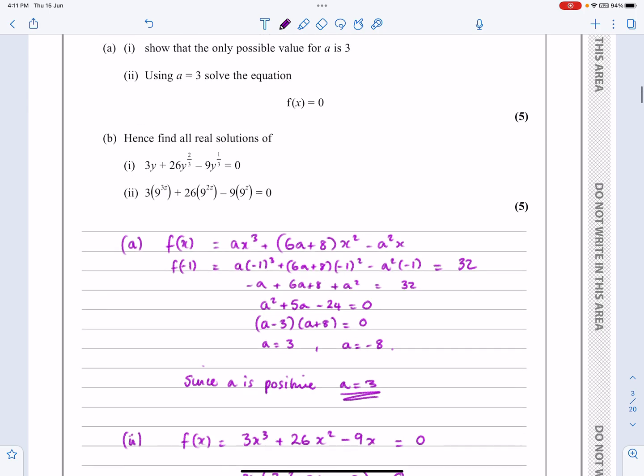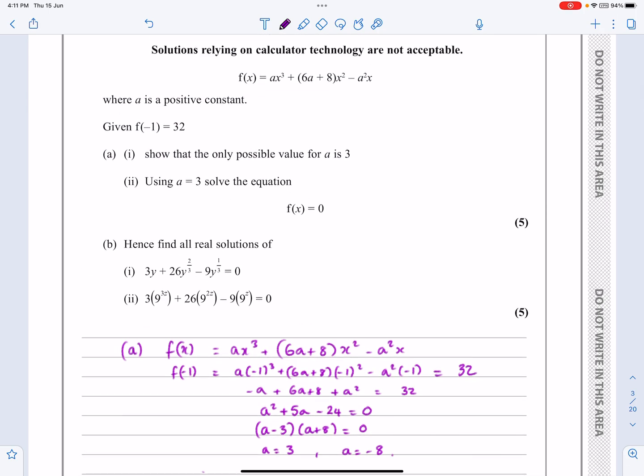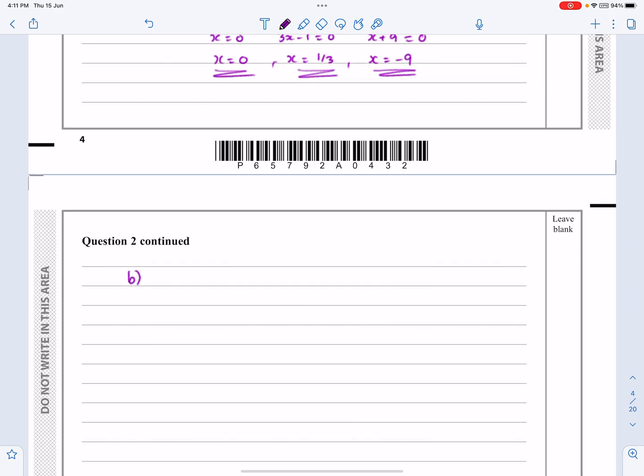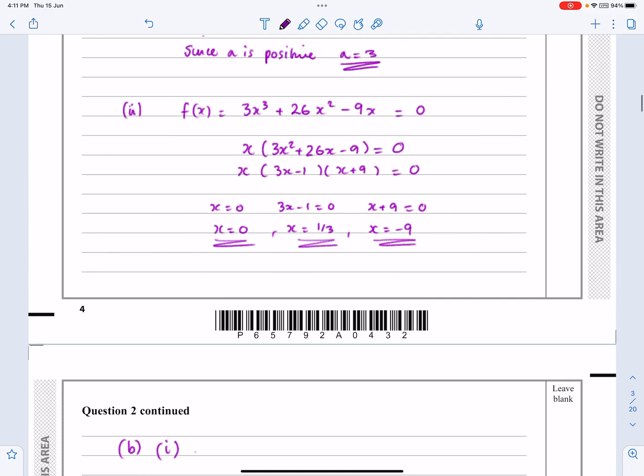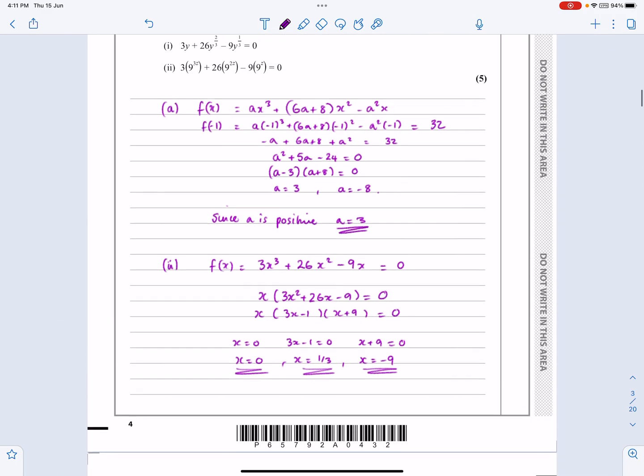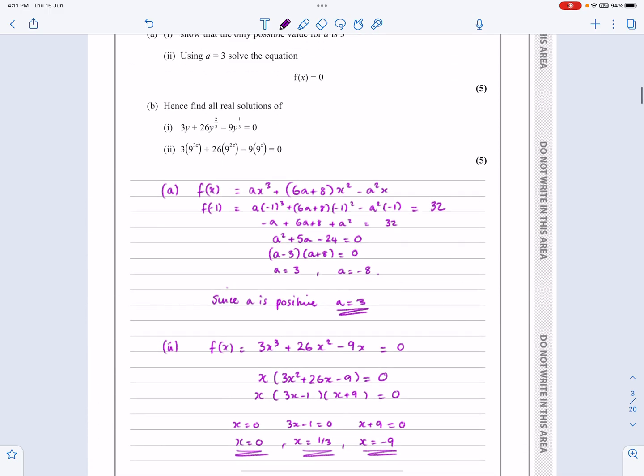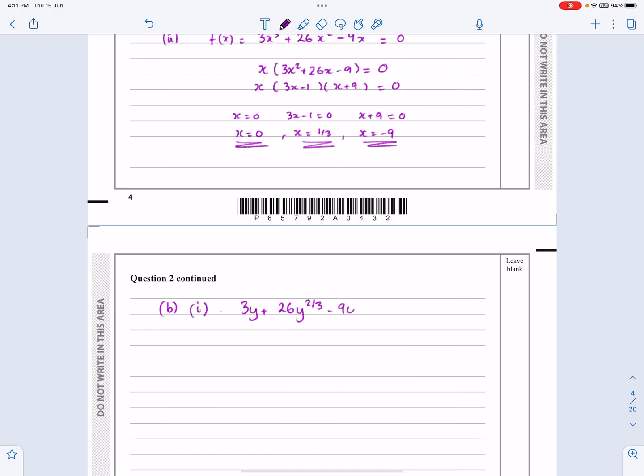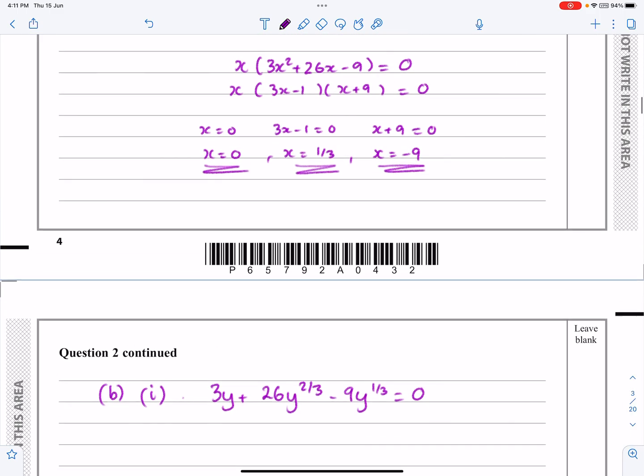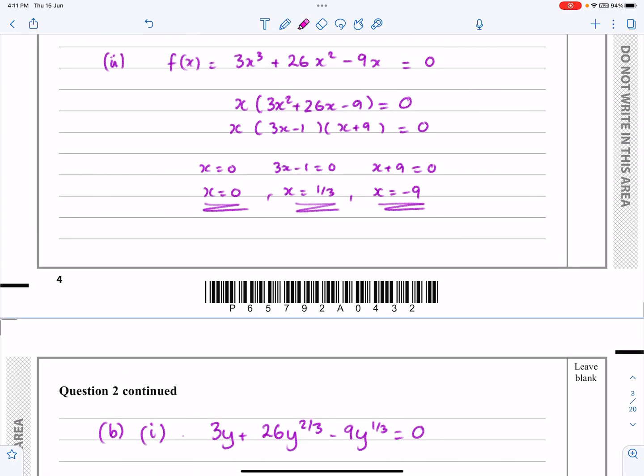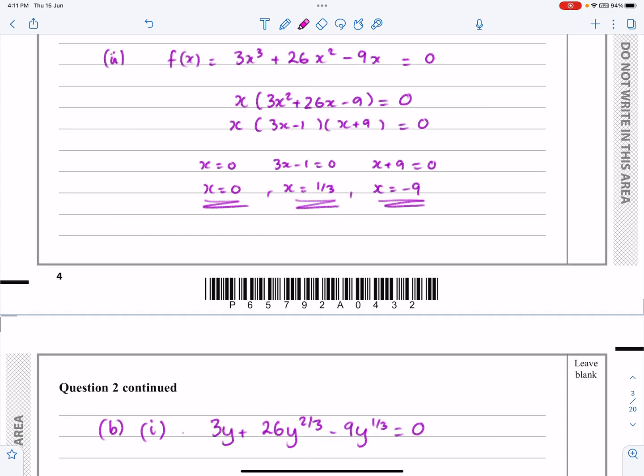Okay, now on to part B. Part B says, hence find the real solutions of this thing. So B part 1 says, 3y + 26y^(2/3) - 9y^(1/3) equals 0. So if we compare this equation here now with this equation here, what we can see is doing a direct comparison, I'm just going to look at this one because I think this is the easiest one to look at. I'm just going to get that y is equal to x³.